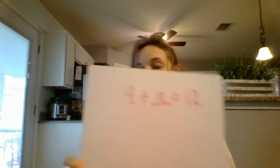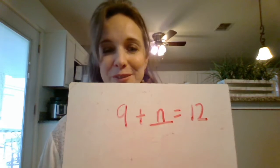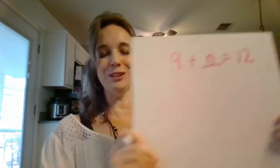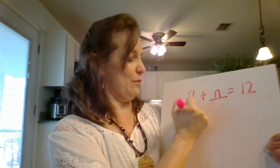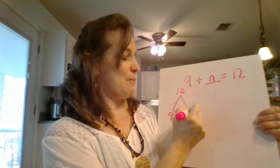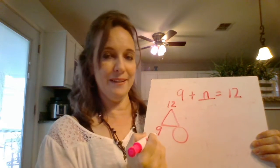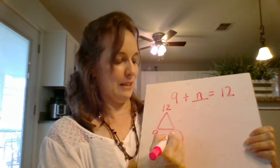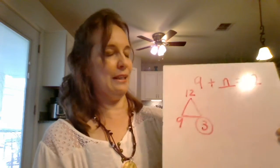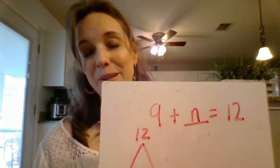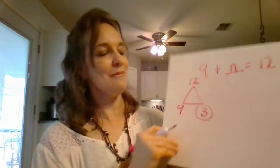It says 9 plus n equals 12. So to find a missing number in addition, you subtract, because we already know part, part, whole. This part is missing right here. So how can we find that? Well, we can go 12 minus 9 and it equals 3. So there is a way to set this up like an algebra problem.